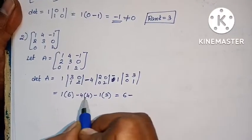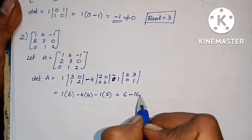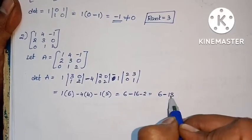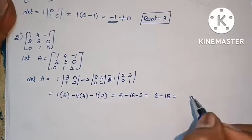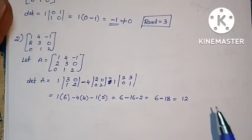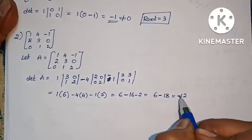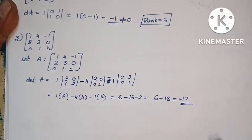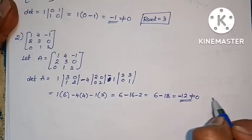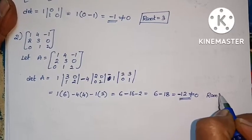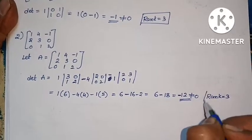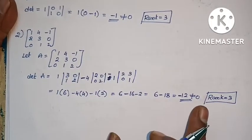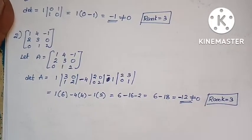Calculating: 6 minus 0, then minus 4 into (2×2 - 0) = 4, minus 0, then minus 1 into (2×1 - 0) = 2, minus 0. So: 6 minus 16 minus 2 = 6 minus 16 is -10, minus 2 is -12. This is not equal to 0. So rank equals 3. The determinant is not equal to 0, so rank is 3, and the problem is complete.